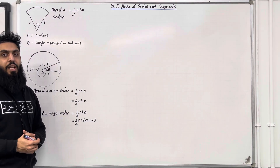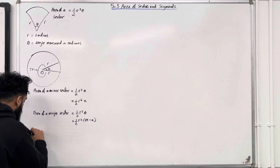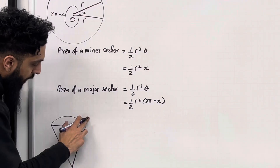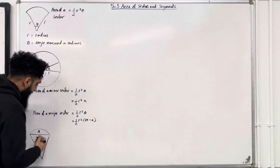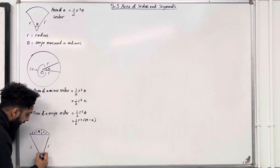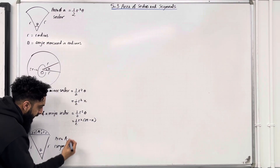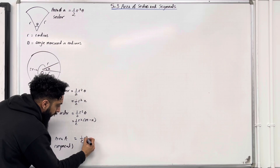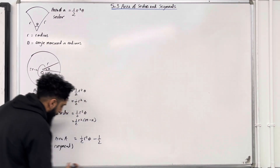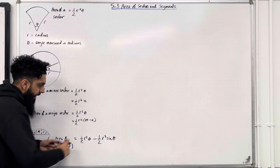Sometimes in the examination you could be asked to calculate the area of a segment. A segment is the area between an arc and a chord. Consider the following sector — suppose this is my chord. This area between the arc and the chord, which I'll call A, is a segment. Suppose the radius is R and the angle is theta. The area A of the segment is given by the area of the entire sector, one half R-squared theta, minus the area of the triangle using one half AB sin C. That gives one half R-squared sin theta. That is how you calculate the area of a segment.